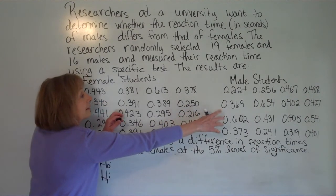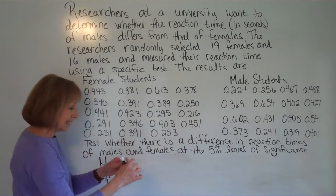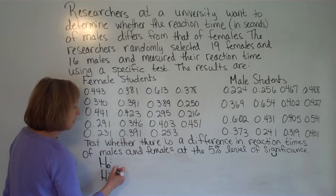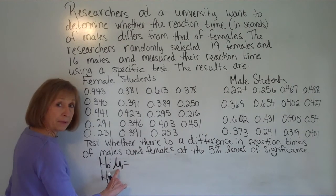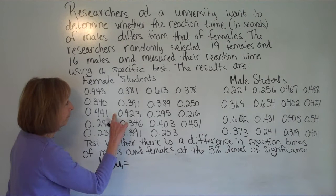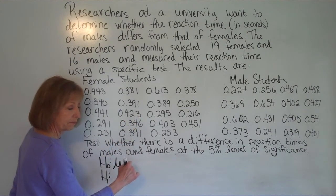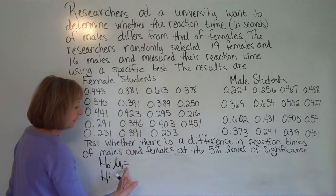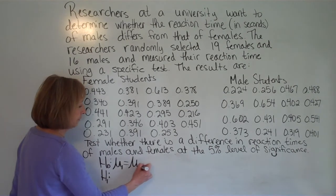Now because they're sample from two groups independent, your null is that mu sub 1, the population mean of the first group, or sometimes you could do mu sub f for females if you want it specific to this particular scenario is equal to mu sub 2.